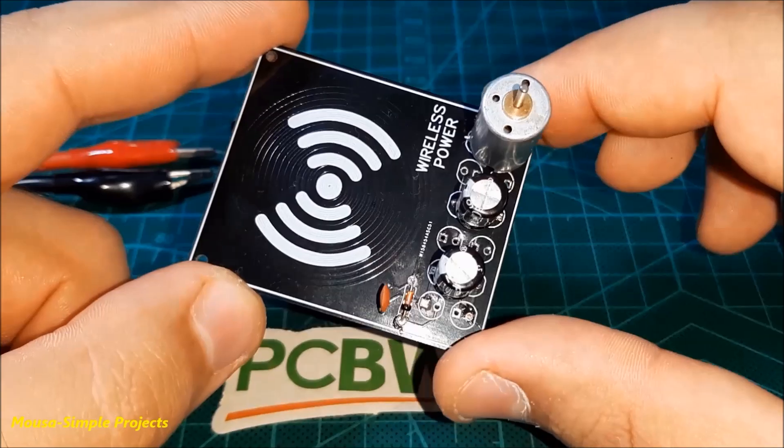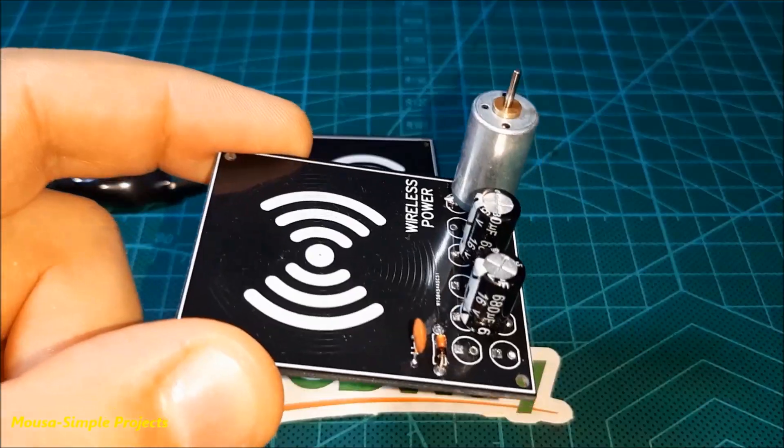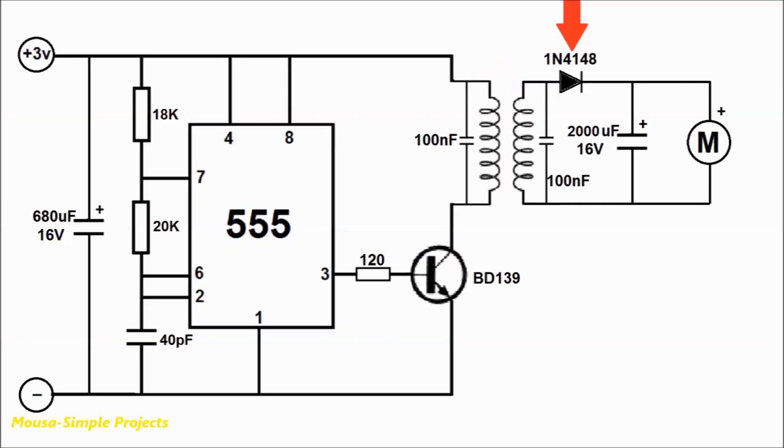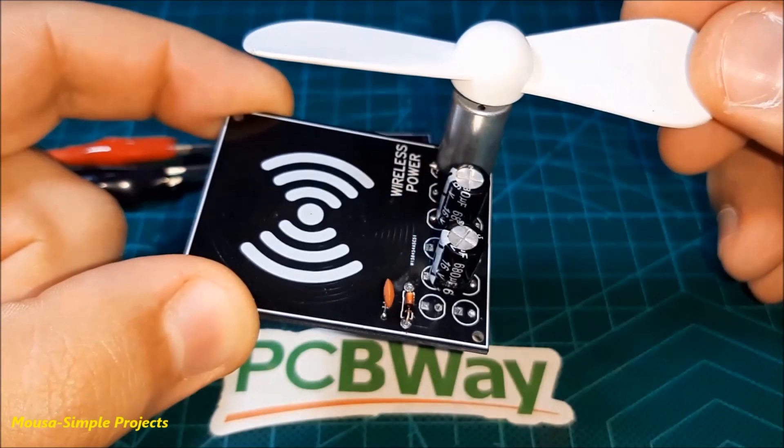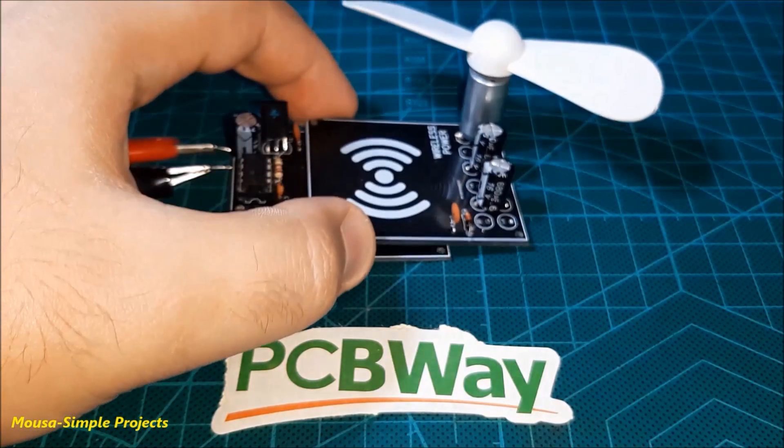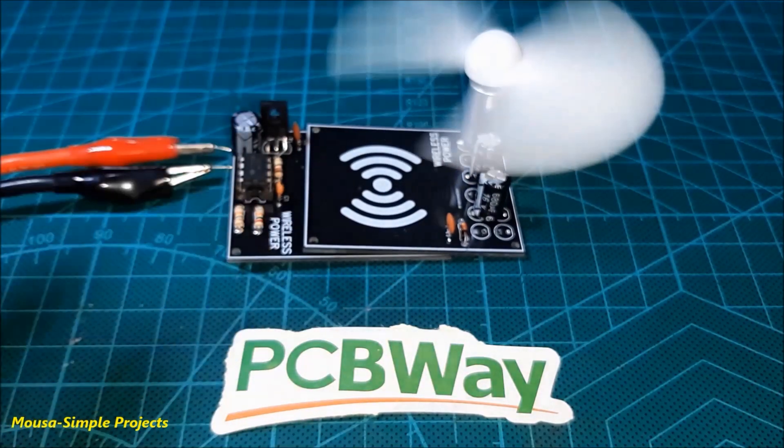The next load that I would like to connect to the receiver coil is a small DC fan motor. You have to put a diode here and some capacitors. As you can see, it's working.